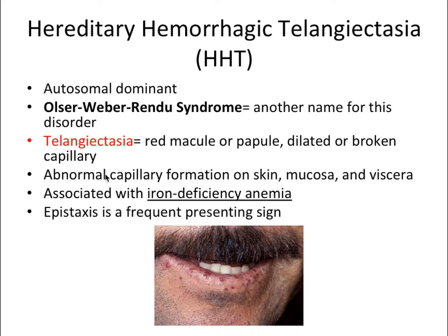HHT is basically an abnormal capillary formation on skin, mucosa, or viscera — the layer surrounding organs. It's associated with iron deficiency anemia, which comes up a lot on exams, so if nothing else, remember HHT being connected with iron deficiency anemia. Epistaxis, or nosebleeds, is also a frequent presenting sign.